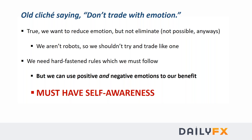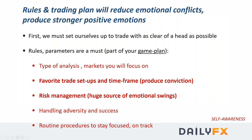We do need hard and fast rules to follow. While we're not algorithmic traders, we still need to have rules in place, but we can use positive and negative emotions to our benefit. The key to making this work for you — making emotions work for you — is self-awareness: knowing and acknowledging that you have certain things going on in your head that impact your decision-making process.